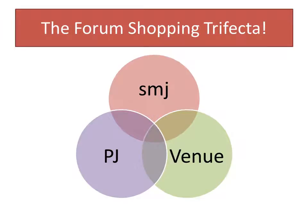The forum shopping trifecta: when you're choosing a court to file your lawsuit in, you have to choose a court that has all three important procedural aspects — subject matter jurisdiction, personal jurisdiction, and proper venue. If you look at a Venn diagram, the courts actually available to file suit in are the ones where subject matter jurisdiction, personal jurisdiction, and venue all intersect — that center part of the Venn diagram.